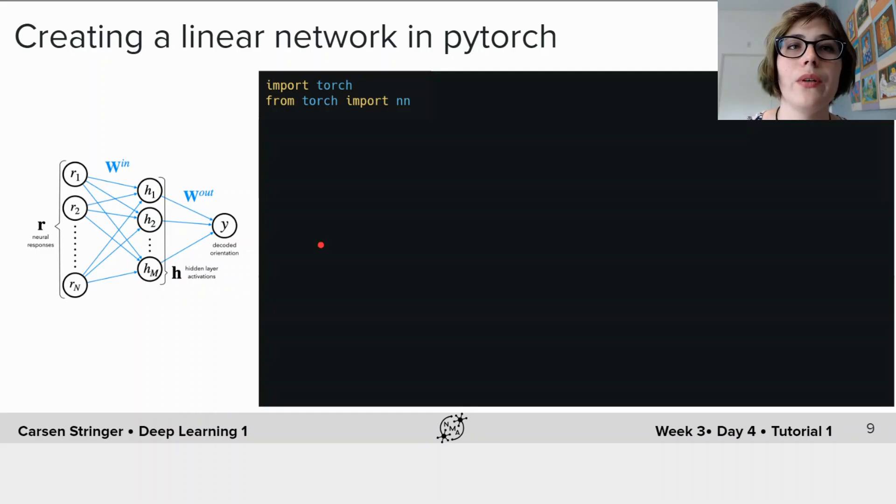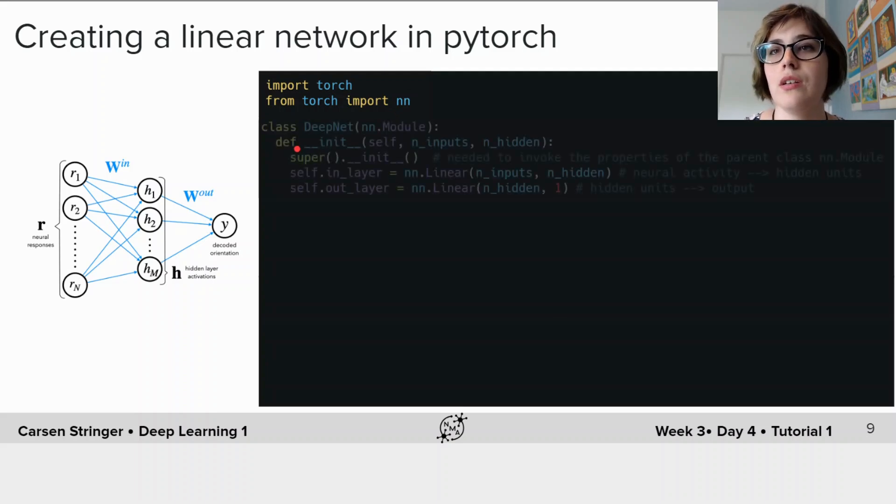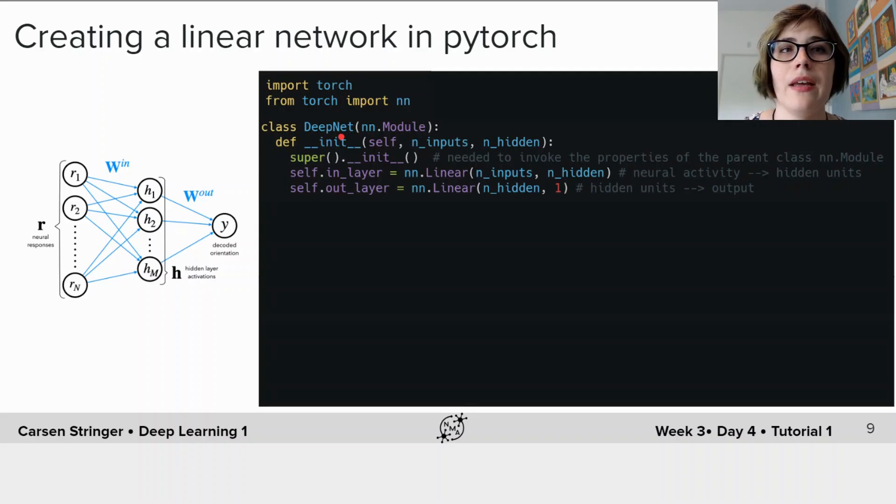So to build this model we are going to use PyTorch. So first we import the PyTorch module using this import torch and then we import the neural network module which is called nn. And now we're going to create a class for this deep network called DeepNet. And a class in Python has different functions which are methods and each of these methods, the first argument to these methods is self which is a class itself.